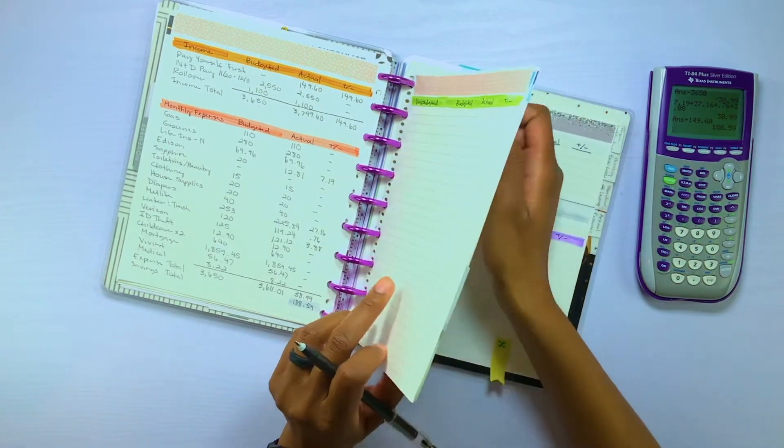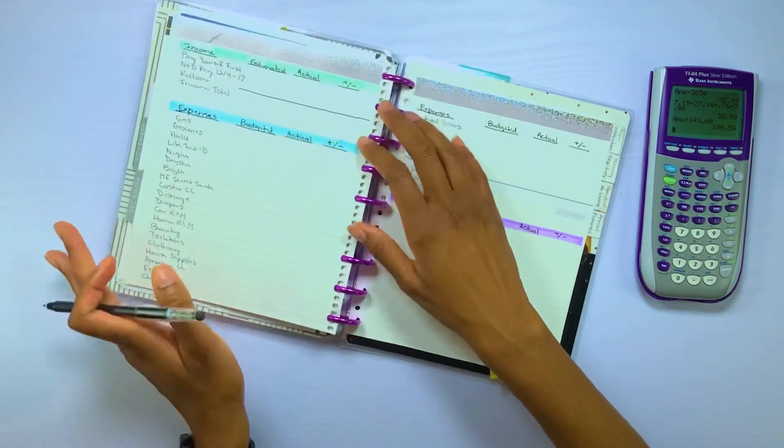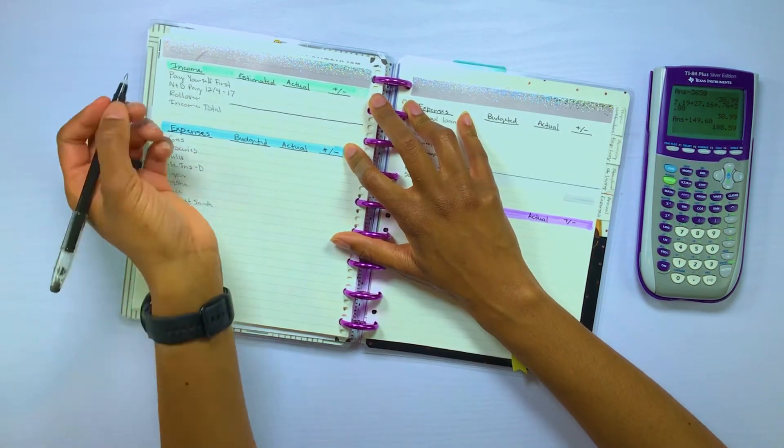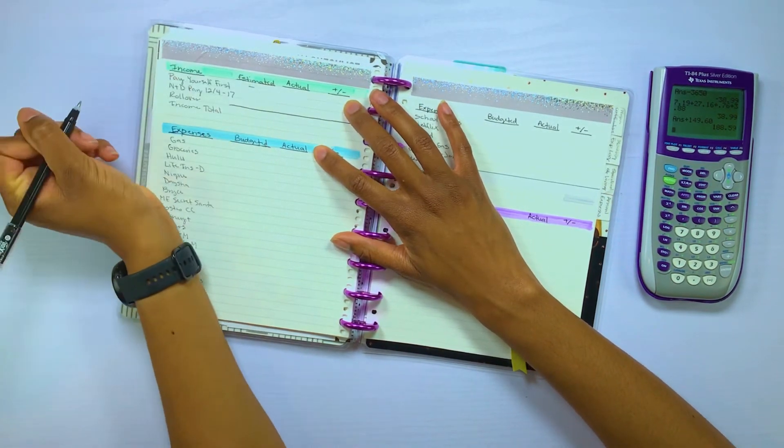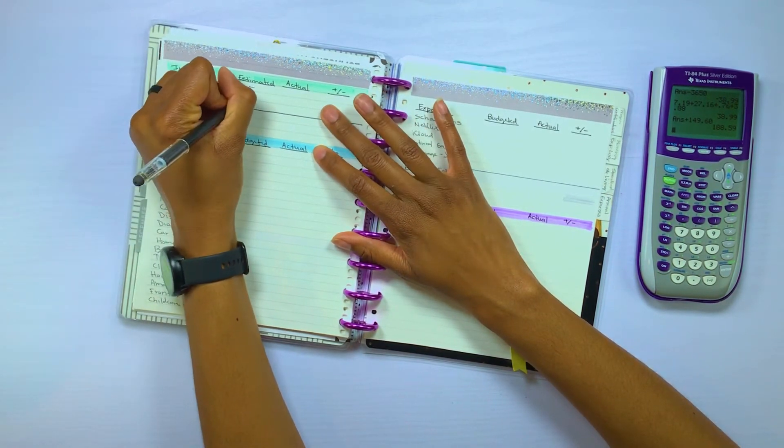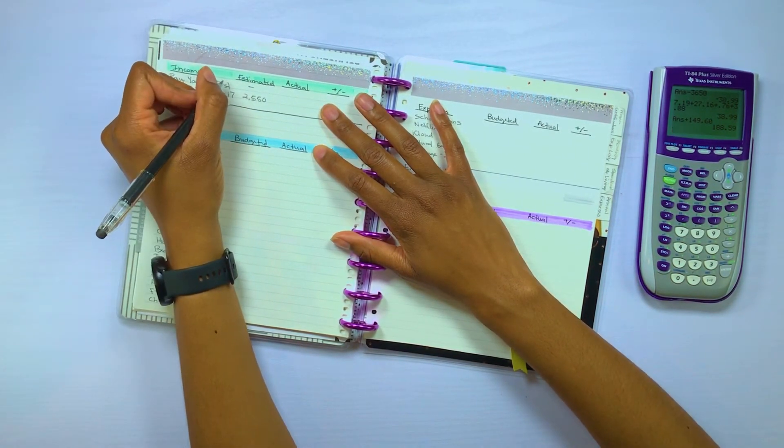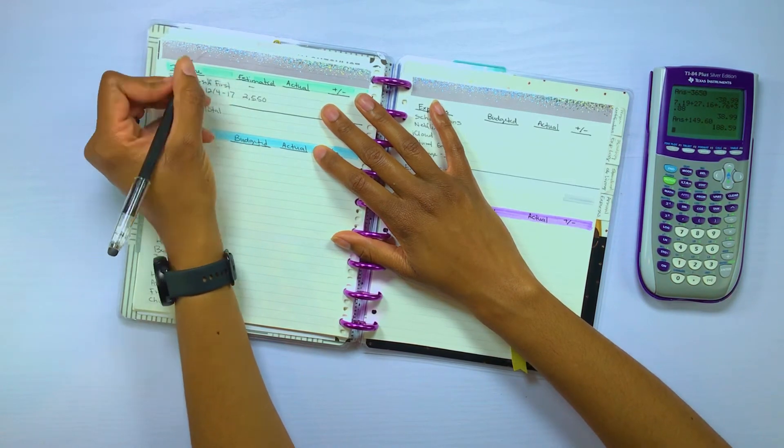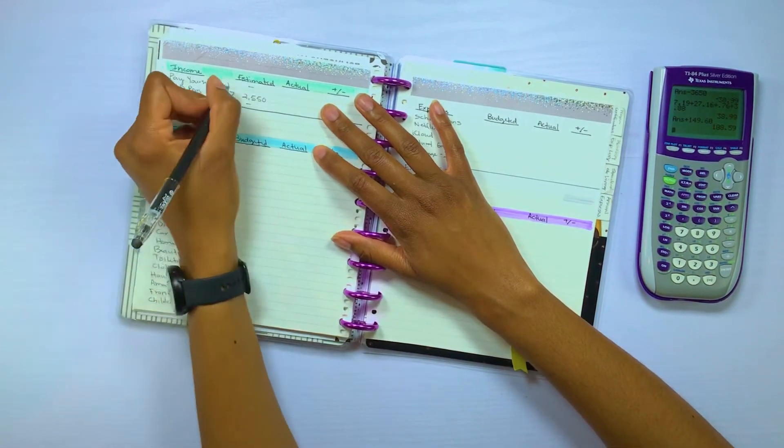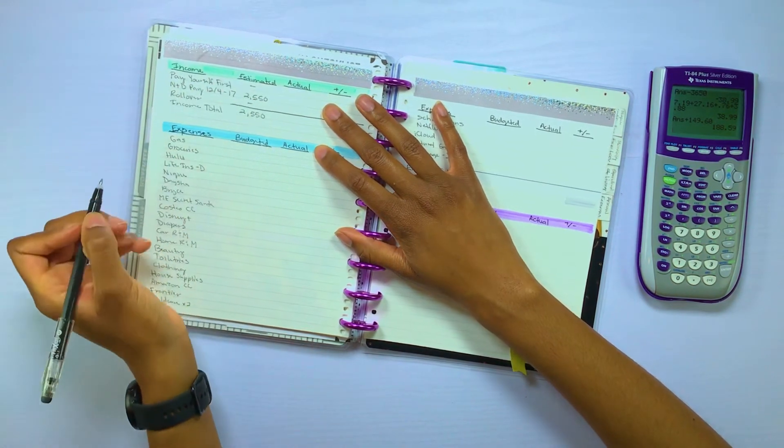So probably the next video is going to be my November budget closeout. So if you want to stay tuned for that. But right now, let's move over to set up December paycheck number one. We don't know what that's going to be until we actually get paid. So what we're going to estimate our income as is our typical $2,550. We are not rolling over any money from November to December. So that's going to be zero. And then our income total is $2,550.